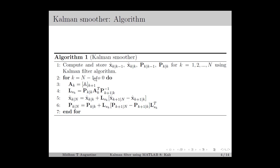For each time instance, we compute the smoother gain Lsk using the corresponding equation, and then compute the smoother estimate x̂k|N and the variance Pk|N using the Kalman Smoother equation and the difference Riccati equation.